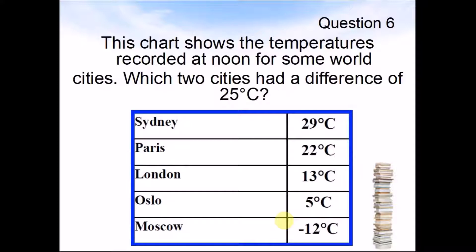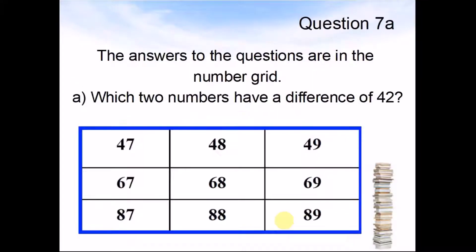Question 7a. The answers to these questions are in the number grid: 47, 48, 49, 67, 68, 69, 87, 88, 89. Which two numbers have a difference of 42? Pause the video until you are ready for the next question.